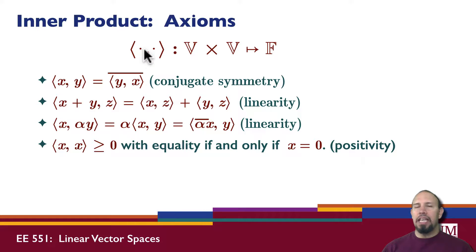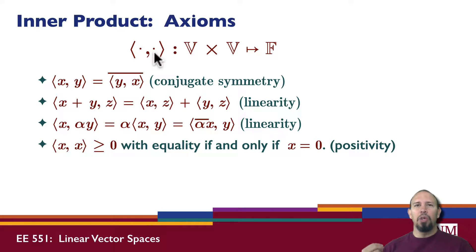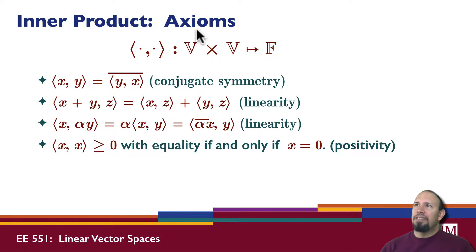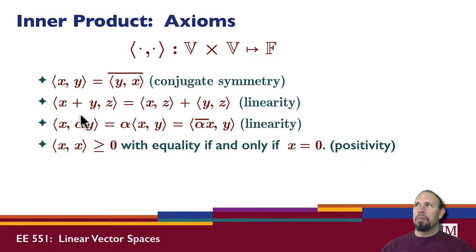An inner product is a generalization of multiplication, but it's different in that when you multiply the two things together you don't get something of the same form — you always get a scalar. The inner product is defined by four properties. Some authors use only three, combining two of them, but this is a standard way of defining the inner product.